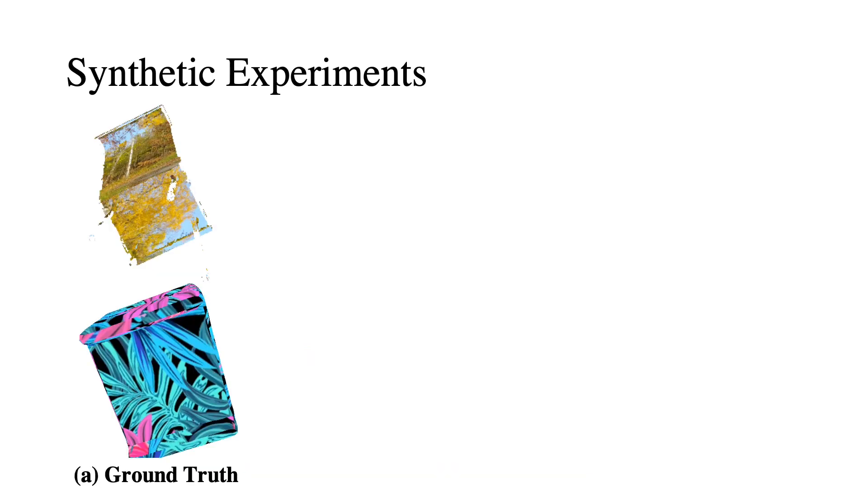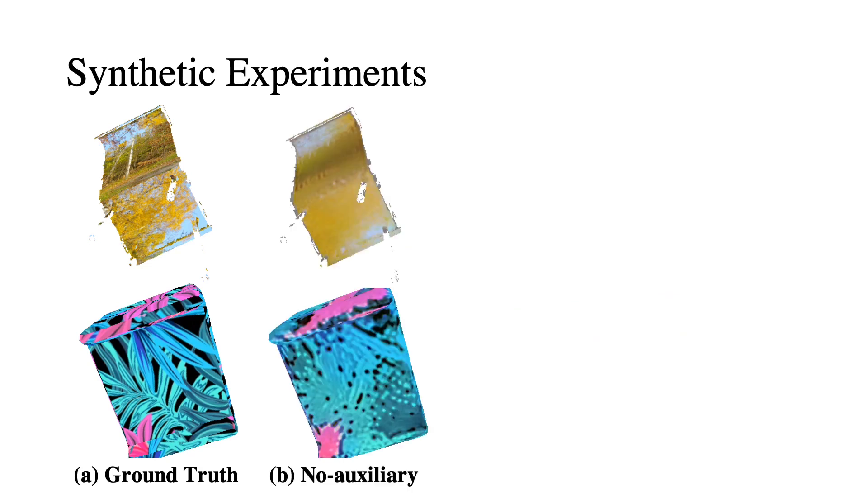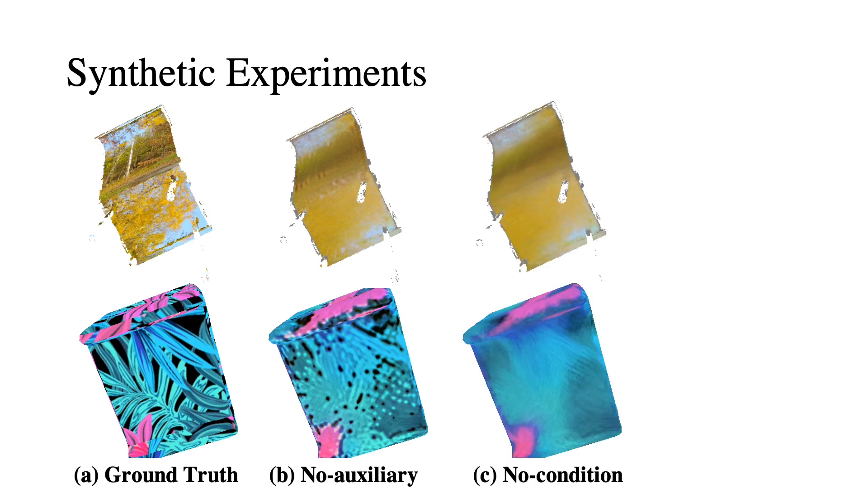We perform an ablation study to understand the influence of our proposed discriminator. By removing the auxiliary view, the discriminator does not tolerate misalignment, and the resulting texture appears as a hard and unrealistic aggregation of views. By removing source views as conditions, the discriminator's role is to distinguish real from fake from the entire input, rather than just comparing the renderings to the input views.